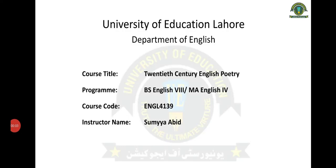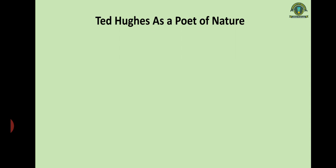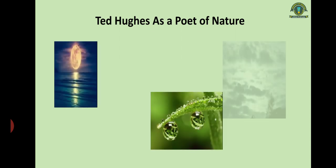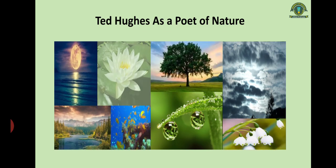Welcome to the class of 20th century English poetry. This module is designed for BS English Semester 8 and MA English Semester 4. The course code is 4139 and I am Sumayya Abid. Today the topic of our discussion would be Ted Hughes as a poet of nature.